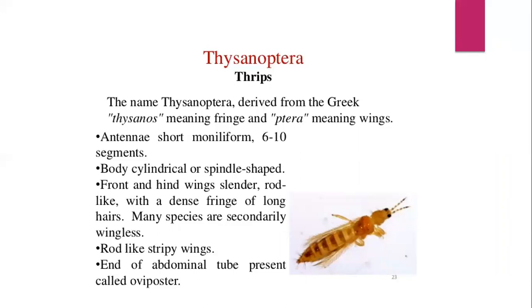Thrips have unique asymmetrical mouthparts. Different thrips species feed mostly on plants by puncturing and sucking up the contents, although a few are predators. Entomologists have described approximately 6,000 species of thrips. The antennae are short, moniliform with 6 to 10 segments. The body is cylindrical or spindle-shaped. The front and hind wings are slender and rod-like, with a dense fringe of long hairs on the sides.